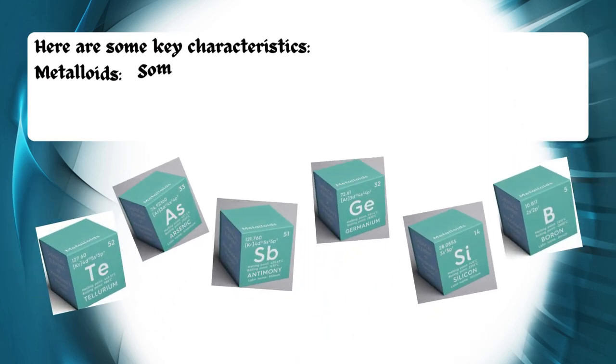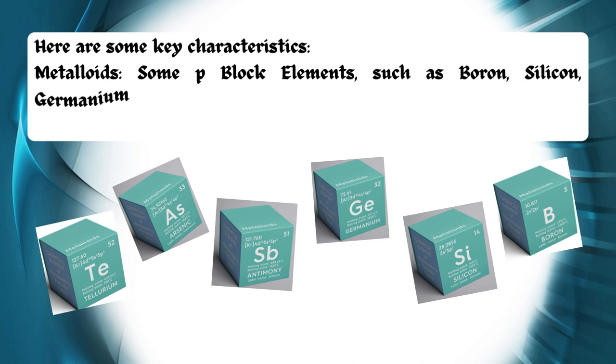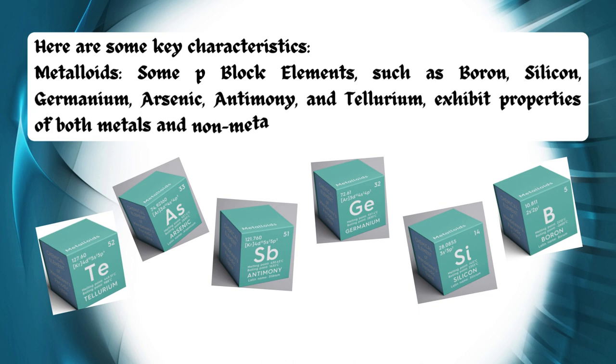Metalloids: some p-block elements, such as boron, silicon, germanium, arsenic, antimony, and tellurium, exhibit properties of both metals and non-metals. They are known as metalloids.